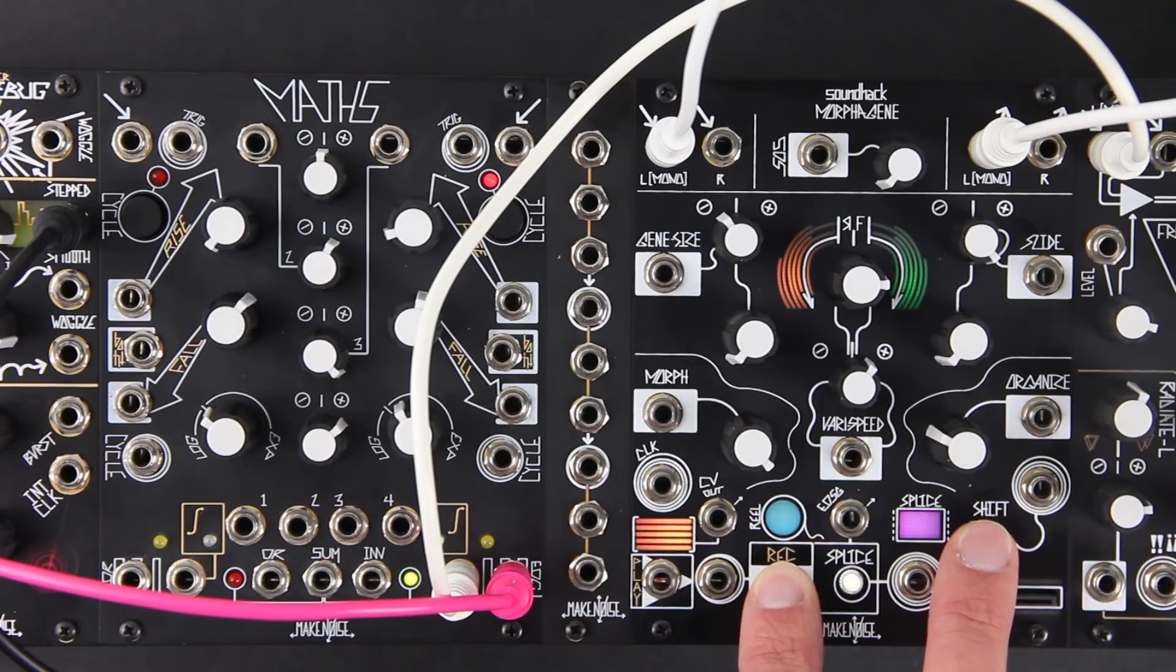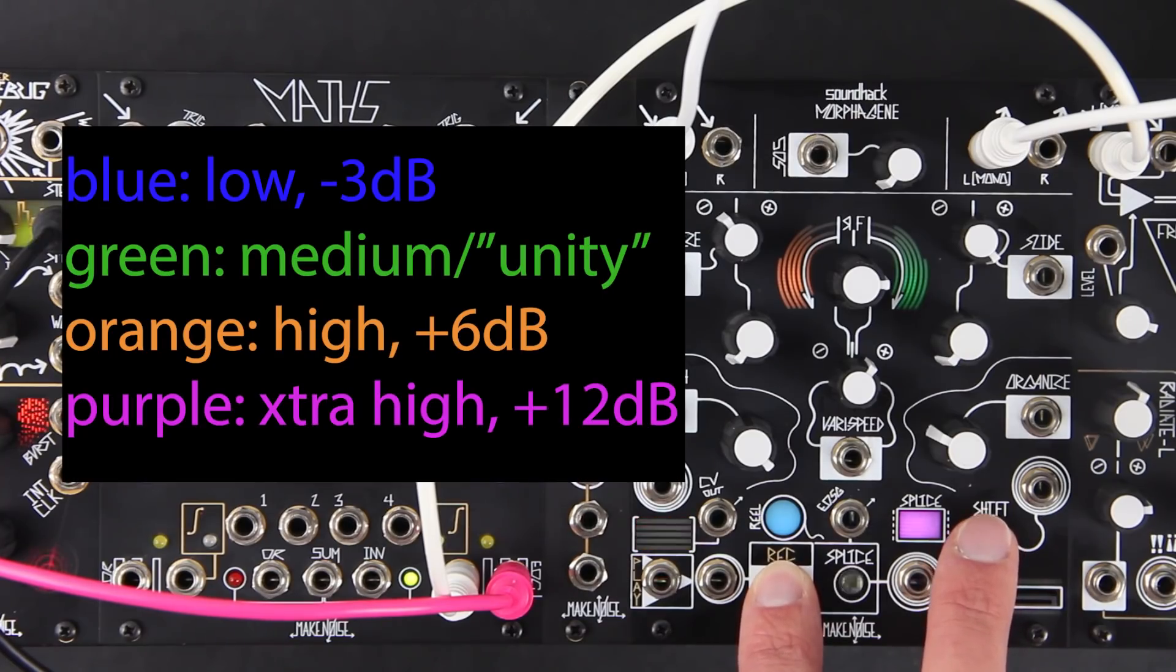Blue is low gain, green medium gain, orange high gain, and purple extra high gain.